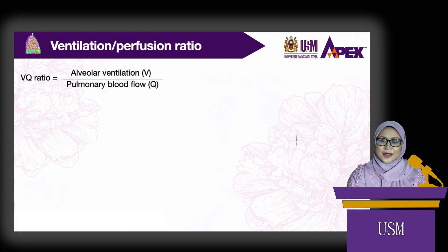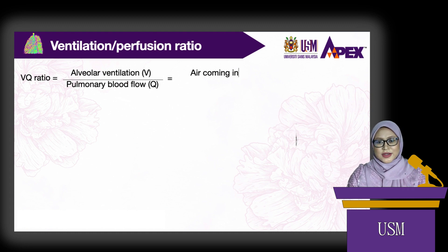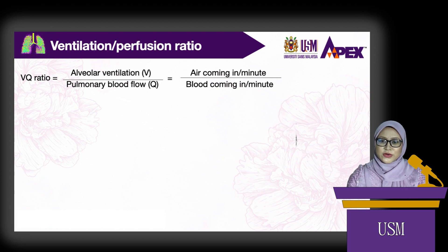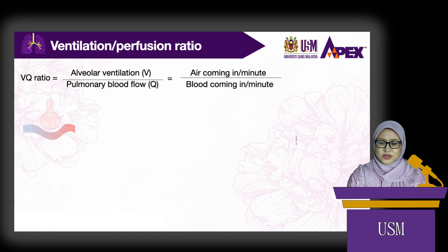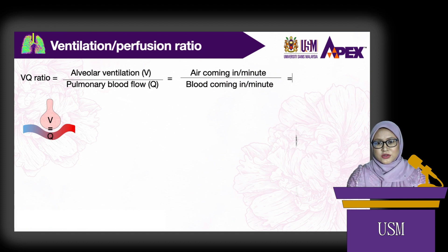Ventilation is the air coming into the alveolar per minute, whereas perfusion is the amount of blood flowing through the capillaries per minute. Ideally, the ventilation and perfusion should match perfectly, and the ratio should be 1 for gas exchange, meaning ventilation should be equal to perfusion.